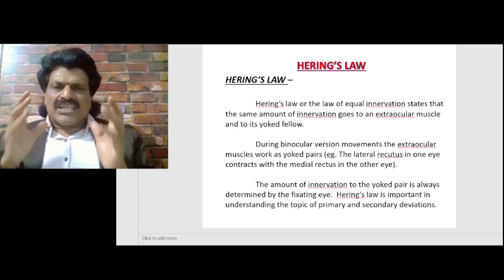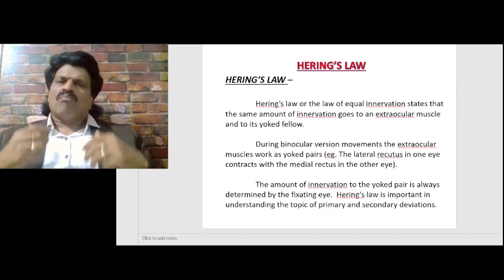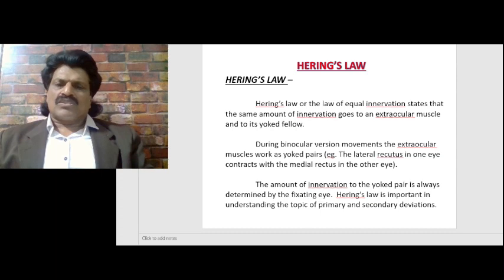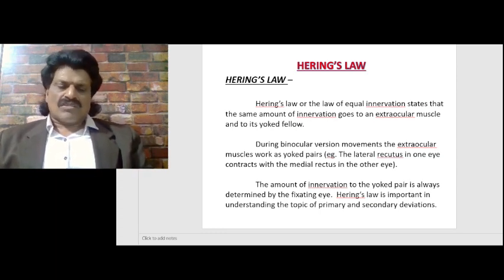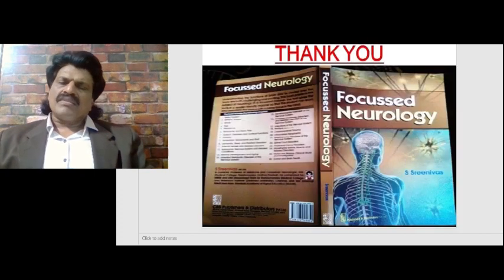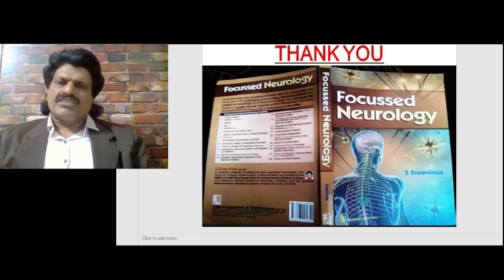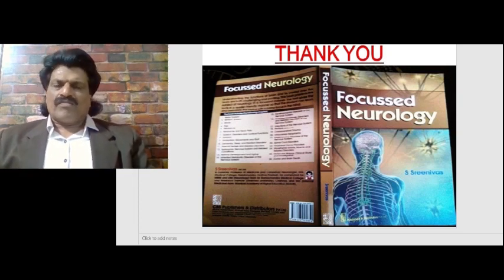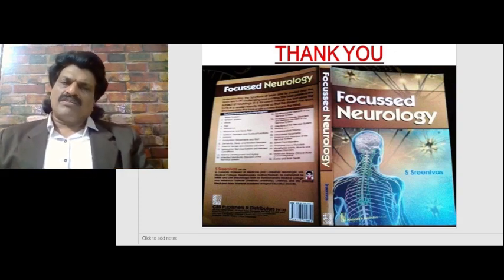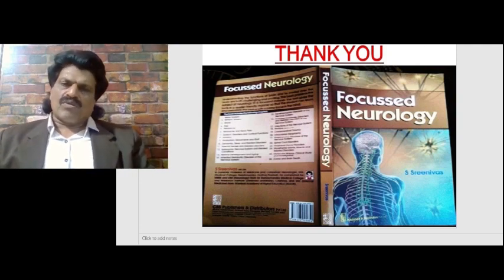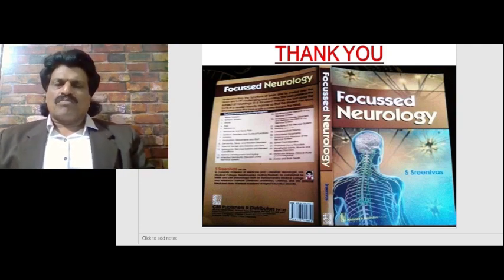So if you know Sherrington's Law and Hering's Law, most eye movements can be easily understood, especially in understanding the topics of primary and secondary deviation. These laws are very useful. I hope you have enjoyed listening to these wonderful laws — Sherrington's Law of Reciprocal Innervation and Hering's Law of Equal and Dual Innervation. The other important concepts of neurology I have put in a book, Focused Neurology, written by me, Dr. S. Srinivas. It is available online from all leading booksellers including Amazon.